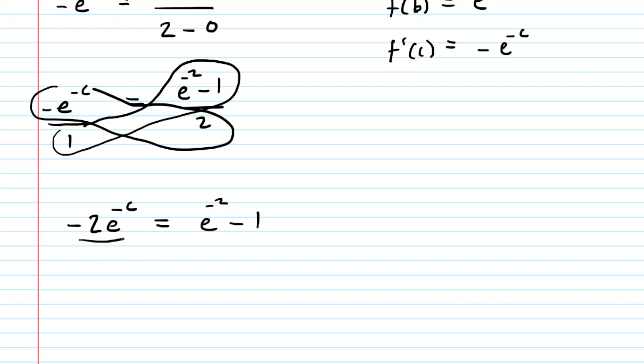We'll divide both sides of this by negative 2. Cancel it out on the left-hand side. So now we have e to the negative c is equal to e to the negative 2 minus 1, all of which is divided by negative 2.